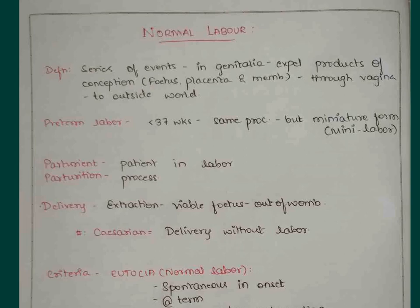Okay, let us study about the chapter normal labor. The definition of normal labor is that it is a series of events that take place in the genitalia to expel the products of conception - that is the fetus, placenta, and membranes - through the vagina to the outside world.